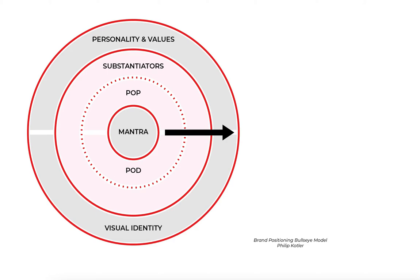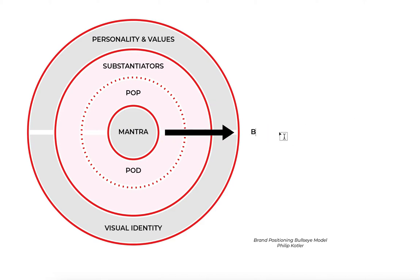In this short video, I want to talk about brand positioning. I'm using the Bull's Eye model from Philip Kotler to demonstrate how it works. When you want to develop your brand positioning, this model always starts with the middle — the centerpiece — by identifying your brand mantra. The brand mantra is also your brand essence; it is usually one word or maximum three words to tell your consumers who you are. That's the anchor of your brand.